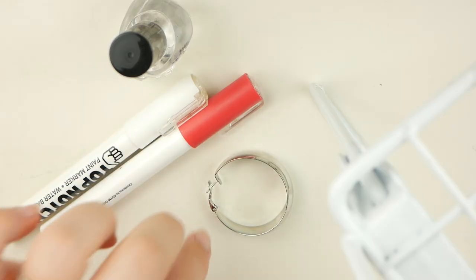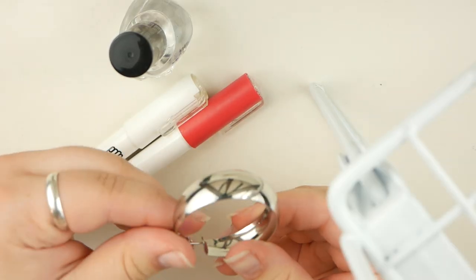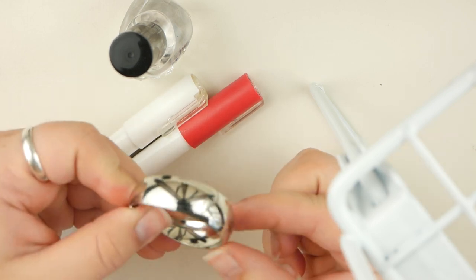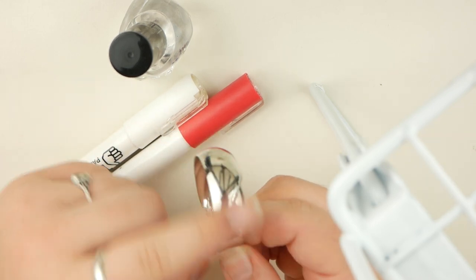Now for supplies. So of course the first thing you're gonna need is a hoop earring, one that's pretty thick so that you can draw on it.